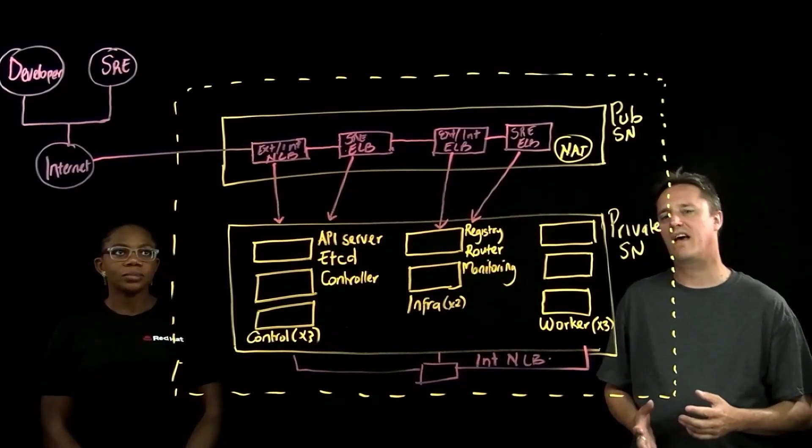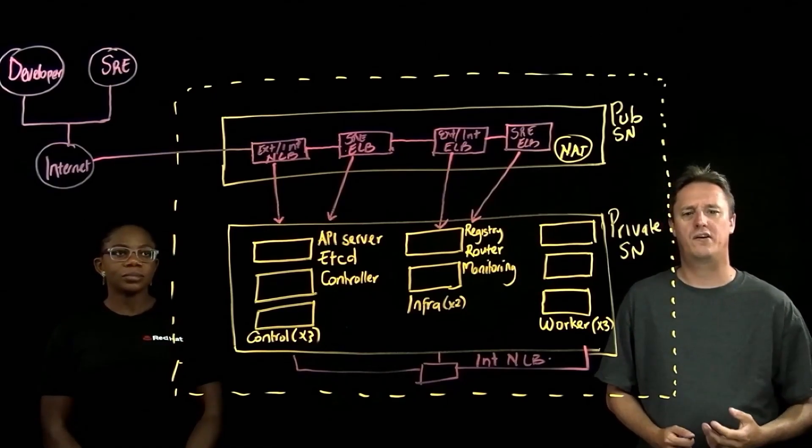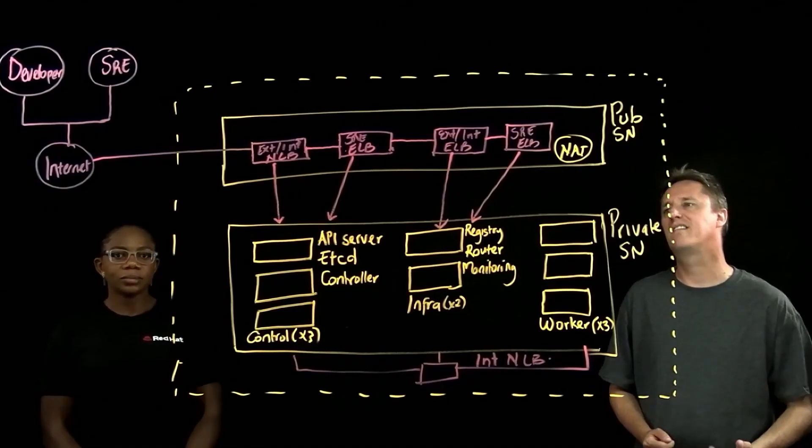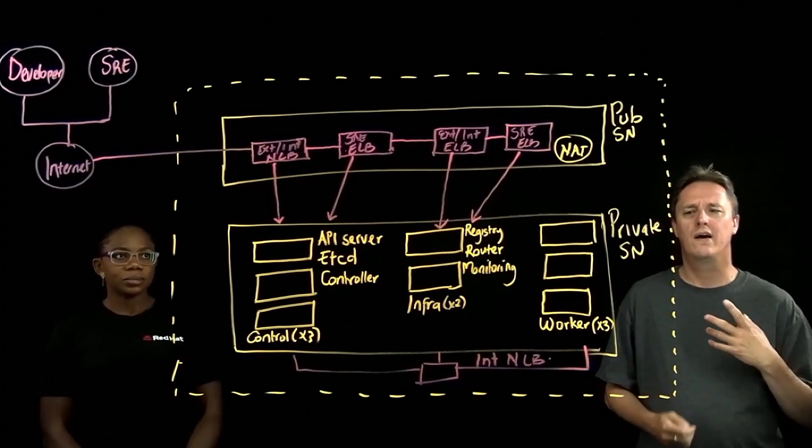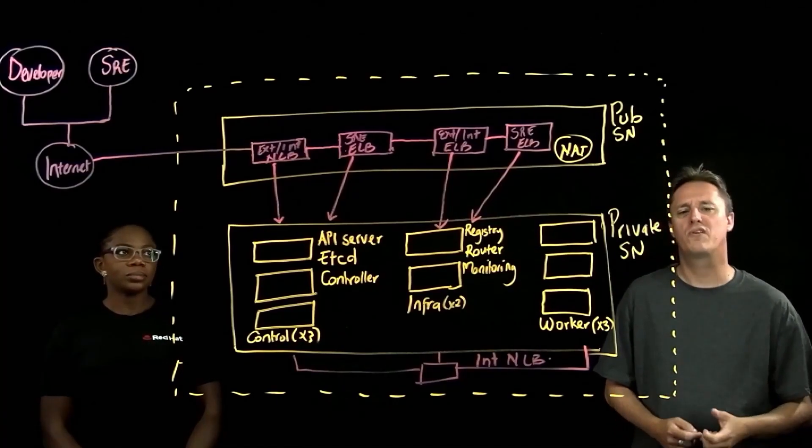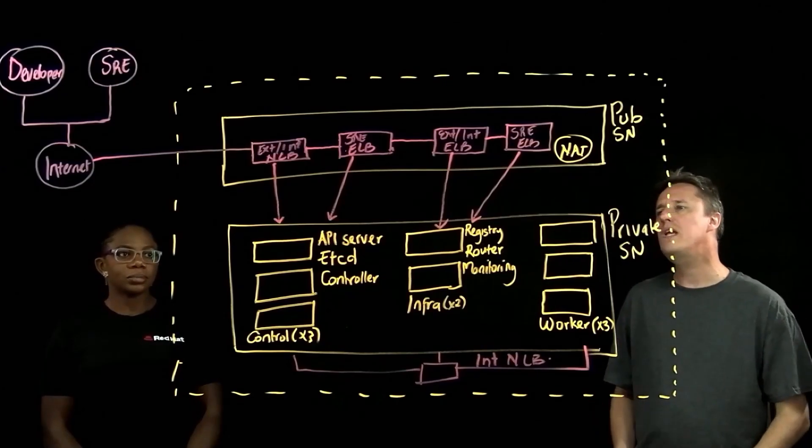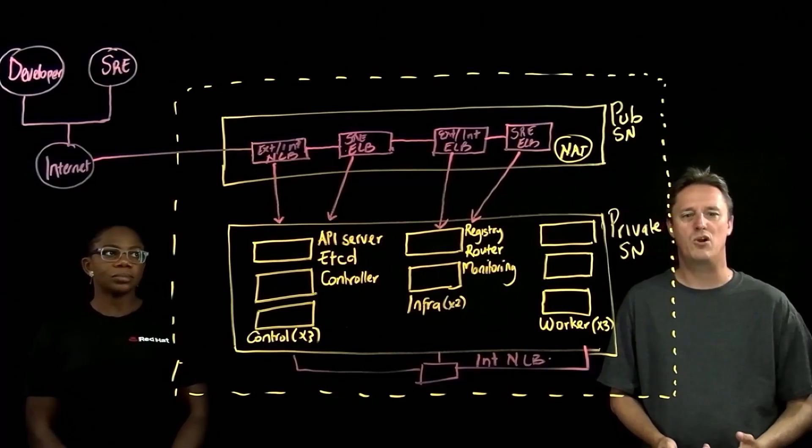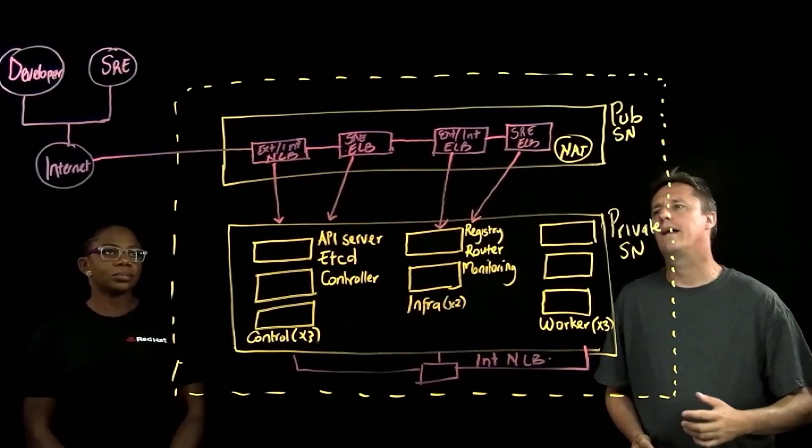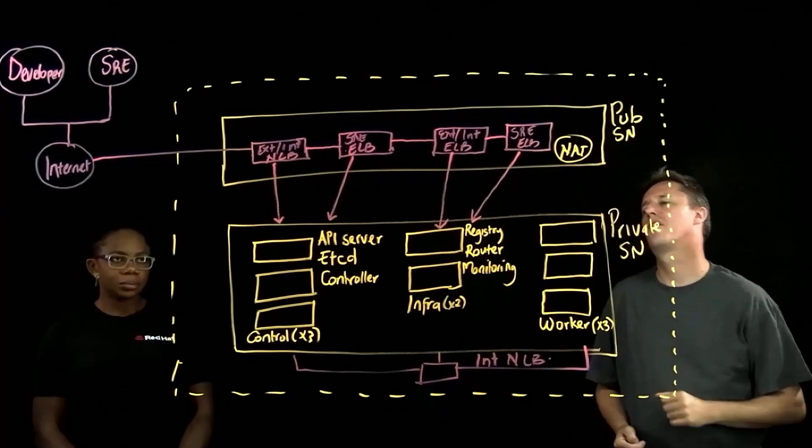And this is a very generic architecture for a public-facing cluster. So we've got these entry points where developers, customer administrators, or Red Hat's SRE are coming in over the internet through a collection of AWS load balancers. And we can see that here on the top of the diagram.